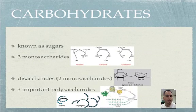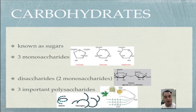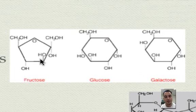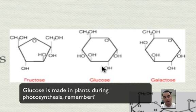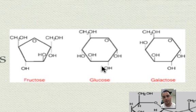Carbohydrates are also known as sugars. There are three monosaccharides — the building blocks. One is fructose, found in fruits — it's a very sweet type of sugar. That's why putting bananas and strawberries in your cereal sweetens it up nicely. Then there's glucose, probably the most important sugar of all because that's what cells love. Your brain loves glucose, your muscles love glucose — it's a very important energy source. And then galactose, which is found in milk.